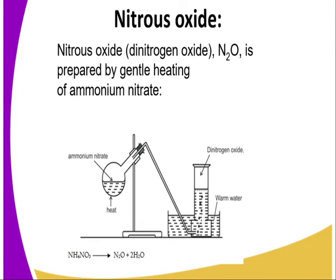Nitrogen has three oxides: nitrogen(I) oxide, nitrogen(II) oxide, and nitrogen(IV) oxide. Nitrogen(I) oxide, also referred to as dinitrogen oxide or nitrous oxide, is prepared by gentle heating of ammonium nitrate. The setup illustrated here can be used to prepare this gas. Ammonium nitrate decomposes on heating to give nitrogen(I) oxide and water, as shown in the equation.